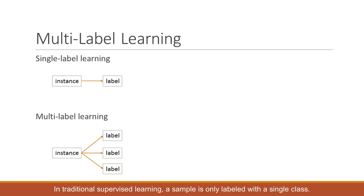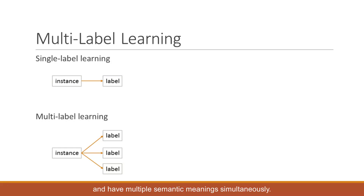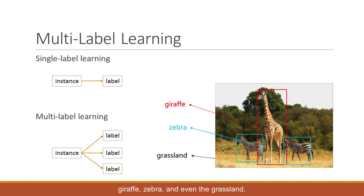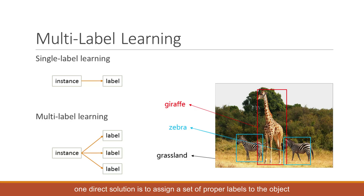In traditional supervised learning, a sample is only labelled with a single class. However, real-world objects might be complicated and have multiple semantic meanings simultaneously. For example, we think this picture could be related to giraffe, zebra, and even the grassland. To account for the multiple semantic meanings that one real-world object might have, one direct solution is to assign a set of proper labels to the object to explicitly express its semantics.